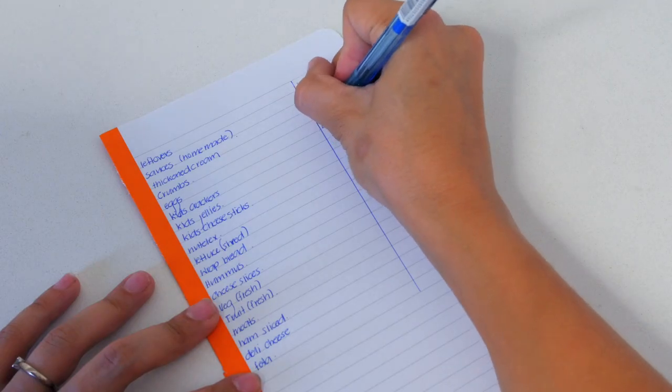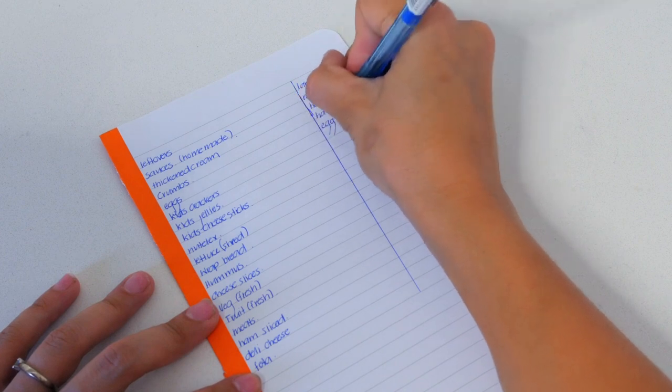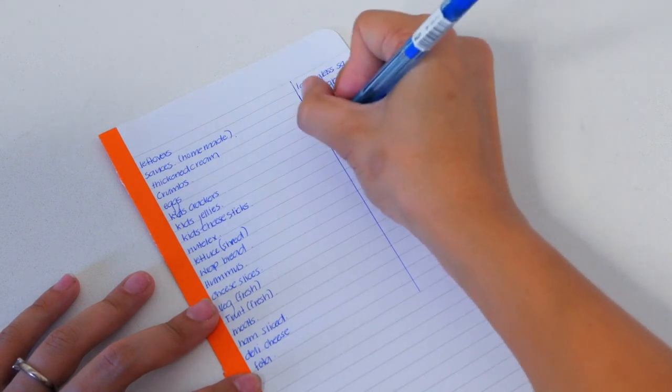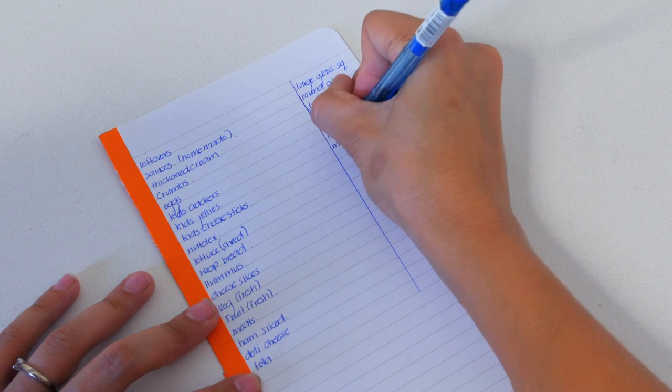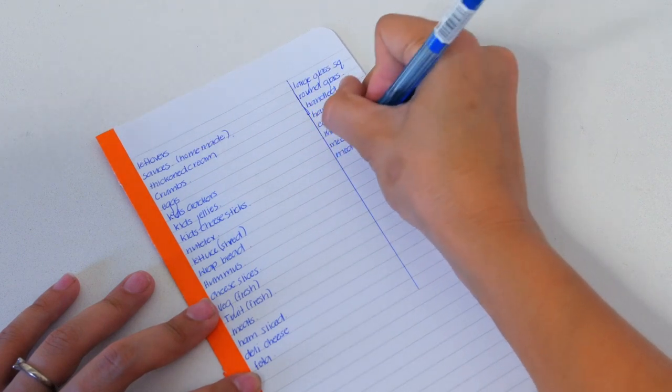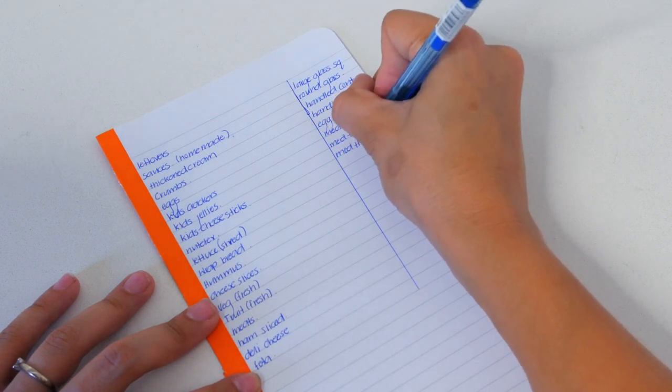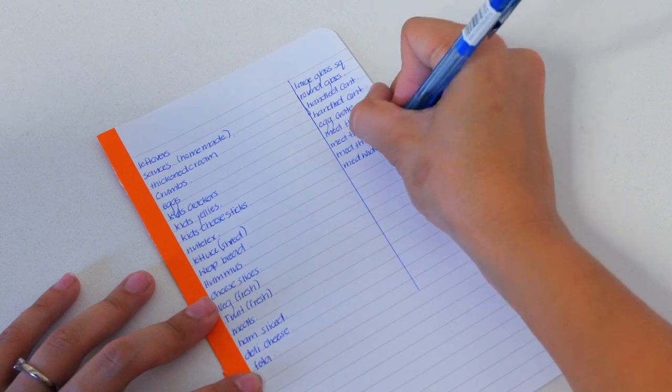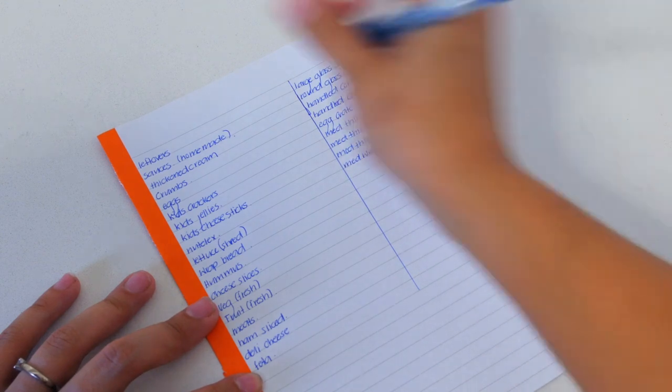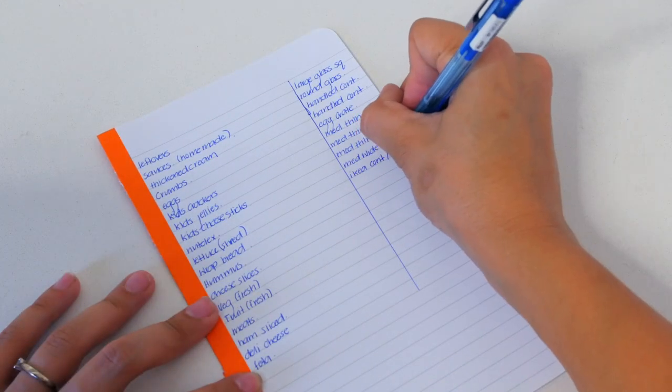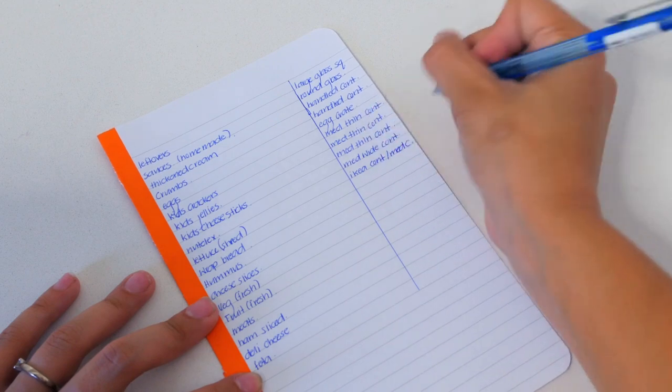Now for some reason I received a bit of criticism in my pantry organisation video for this next step. Personally I find it helpful to list off all of the items that need to go back in the fridge and then list an appropriate container to put them in. It's a way of finding a good order without having to fiddle around with swapping and changing containers later down the track but if you find it unnecessary that's totally okay too.